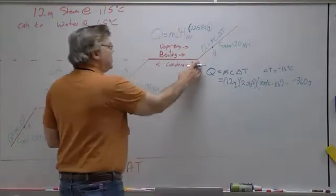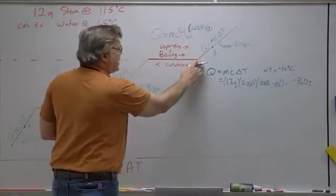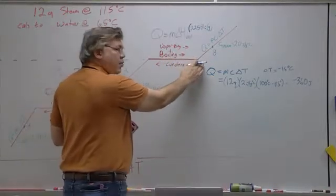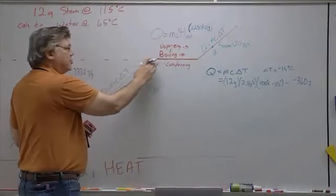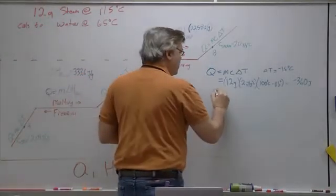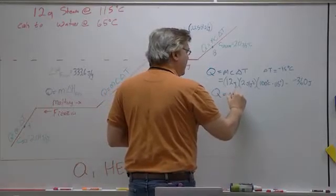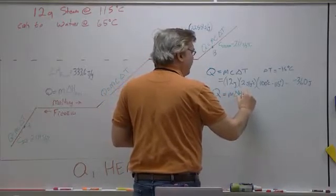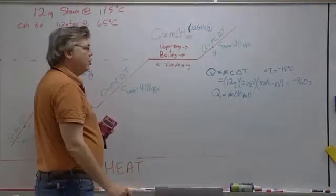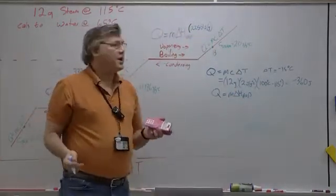Now the next thing I need to do is I need to have the steam actually go through the phase change, the condensation from steam at 100 degrees Celsius to water at 100 degrees Celsius. So for that, I'm going to use Q equals M delta H of vaporization, and that's 2258 joules per gram. There's no delta T here, it occurs at constant temperature.